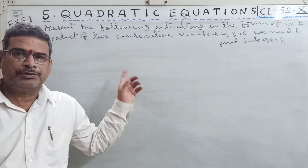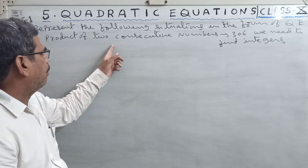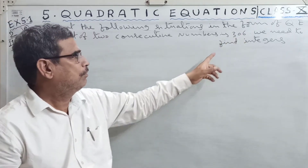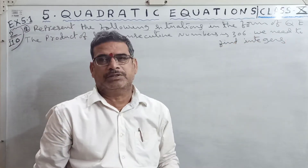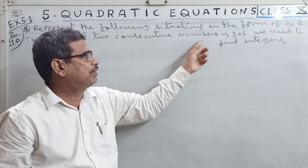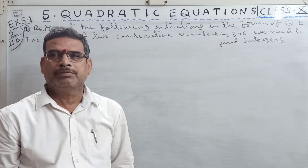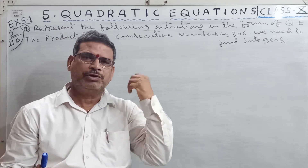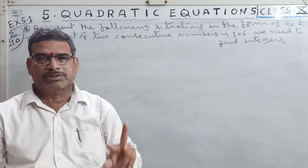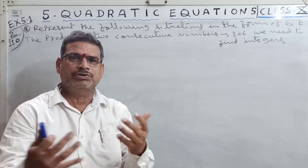Second question: the product of two consecutive numbers is 306. We need to find the integers. The meaning of 'product' is multiplication. What we have to multiply? Consecutive two numbers. The meaning of 'consecutive' is side-by-side numbers, successive numbers.